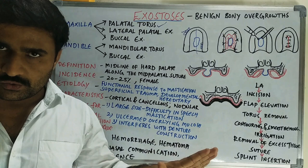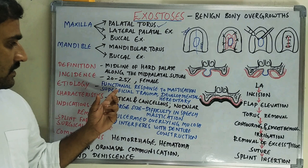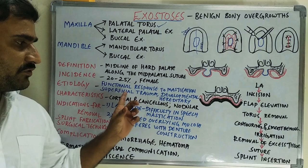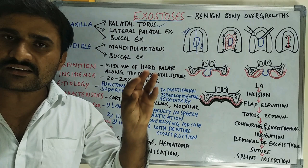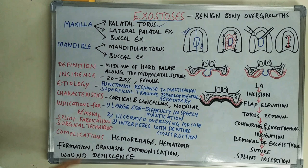Regarding etiology, the exact etiology is not known. Some of the suggested etiological agents include stimulation due to function — that is a functional response to mastication — superficial trauma as a response to trauma, and developmental or hereditary factors. But the exact etiology is not known.